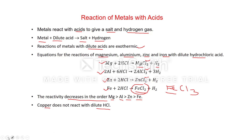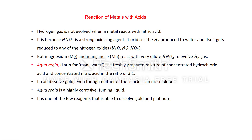An important point: hydrogen gas is not evolved when a metal reacts with nitric acid. This is because HNO₃ is a strong oxidizing agent — it oxidizes the H₂ produced to water, and itself gets reduced to nitrogen oxides such as nitrous oxide (N₂O), nitric oxide (NO), or nitrogen dioxide (NO₂).